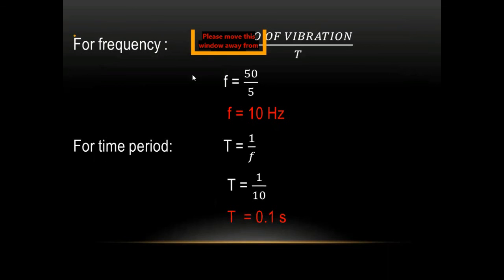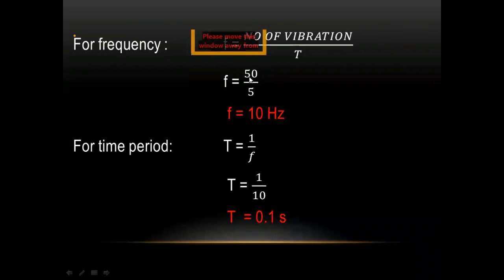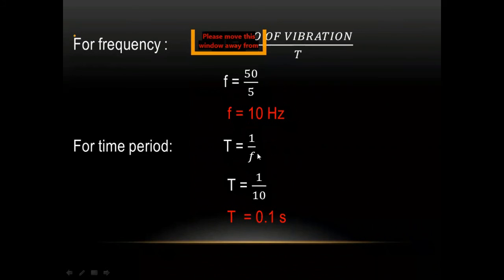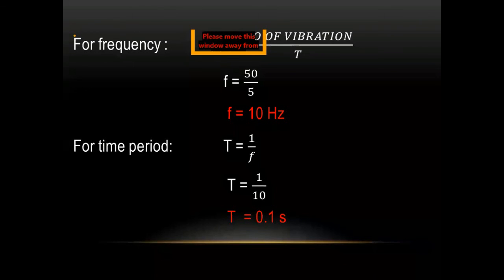Solution of numerical 12.6: For frequency, using f = N/t = 50/5 = 10 Hz. Note that the number of vibrations has no unit as it is a pure quantity. For time period, using T = 1/f = 1/10 = 0.1 s. Take a screenshot of this slide.